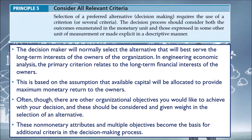Principle 5: consider all relevant criteria. Selection of a preferred alternative requires the use of a criterion or several criteria. The decision process should consider both outcomes enumerated in monetary units and those expressed in other units or described explicitly. The decision maker will normally select the alternative that best serves the long-term interest of the owners. Non-monetary attributes and multiple objectives become the basis for additional criteria in the decision-making process.